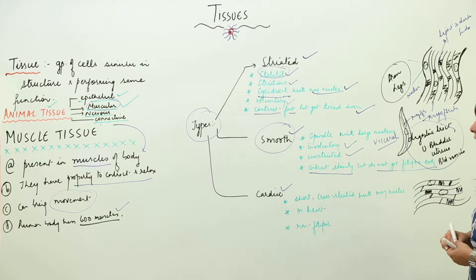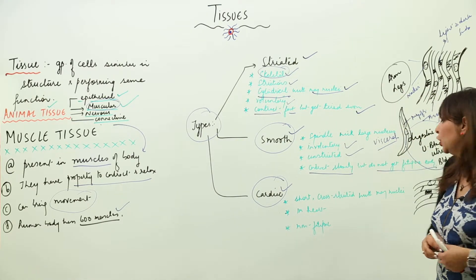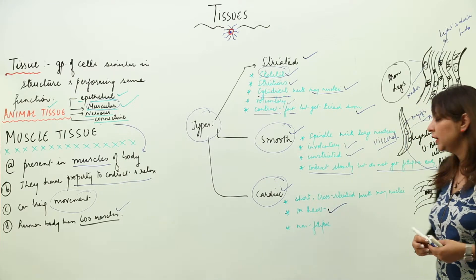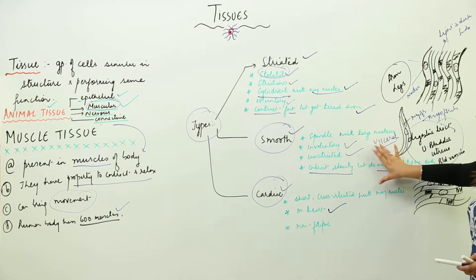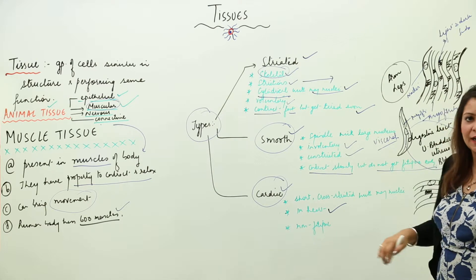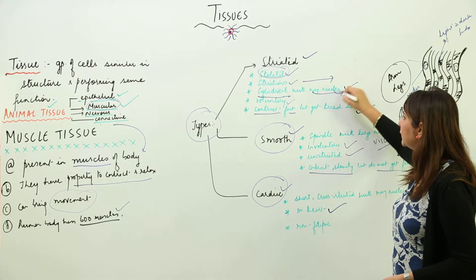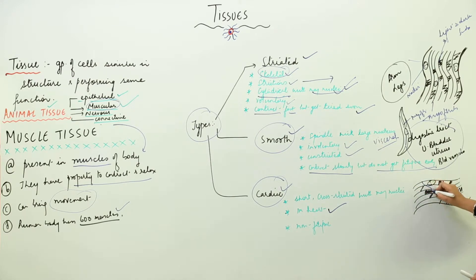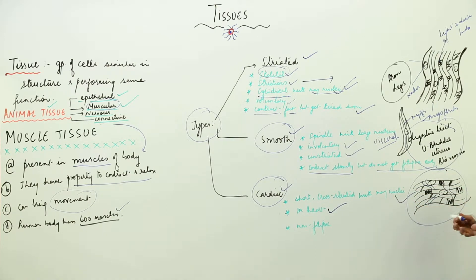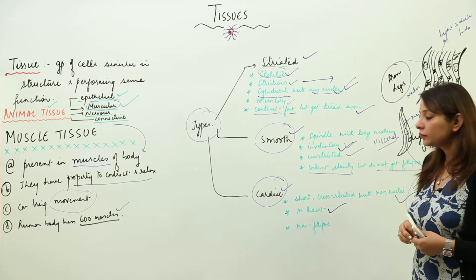Smooth muscles are present in visceral organs such as the digestive tract, urinary bladder, uterus, and blood vessels. The third type is cardiac muscle. As the name suggests, it is the muscle present in the heart. It has some features similar to striated muscle — it has striations, light and dark bands — and it is multi-nucleated, similar to striated muscle.